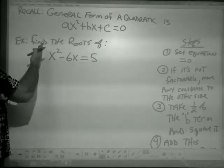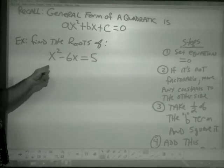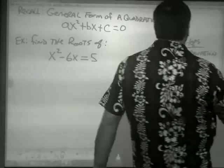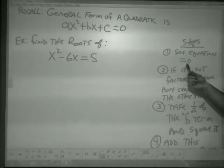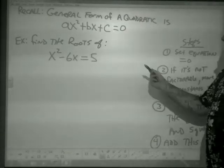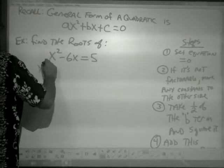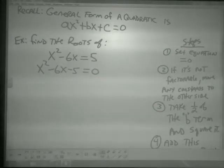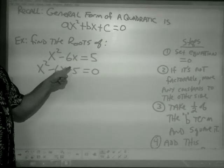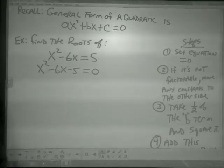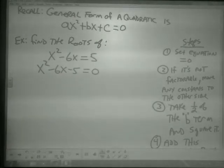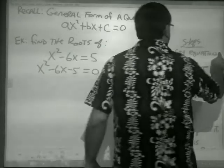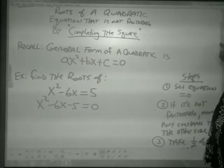For example: find the roots of x² - 6x = 5. Just like before, our first step is to get the equation equal to zero. I subtract 5 from both sides and get x² - 6x - 5 = 0. Now, factors of 5 with a difference of 6 don't exist — 5 and 1 have a difference of 4 — so this is not factorable.